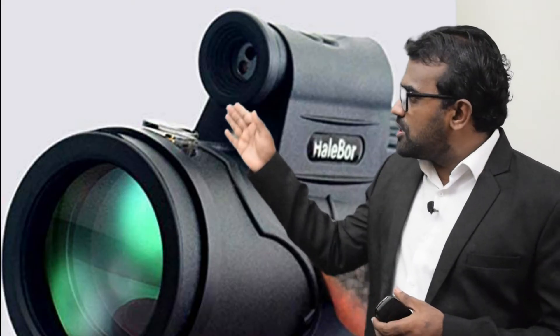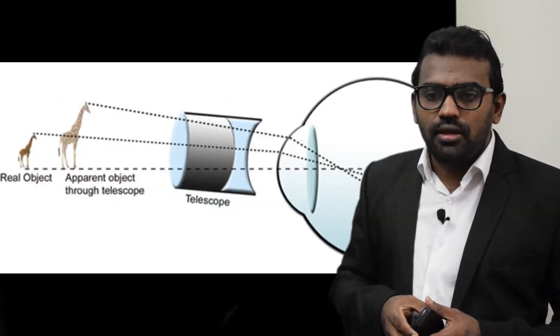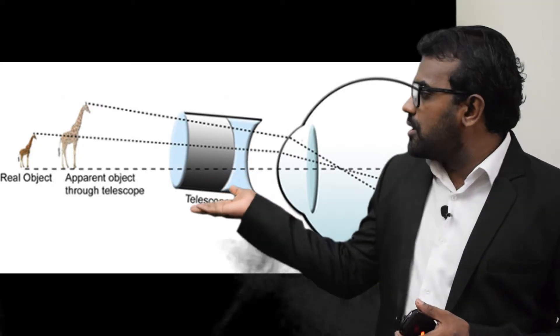If the child is partially impaired, distance vision telescopes are available. The child can be benefited by using distance vision telescopes.